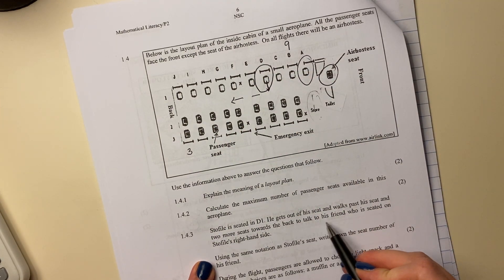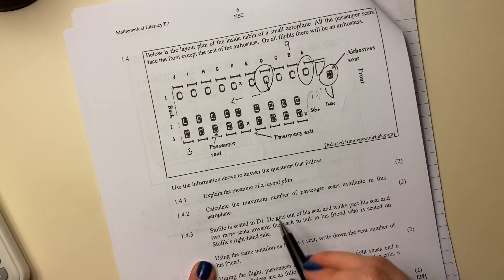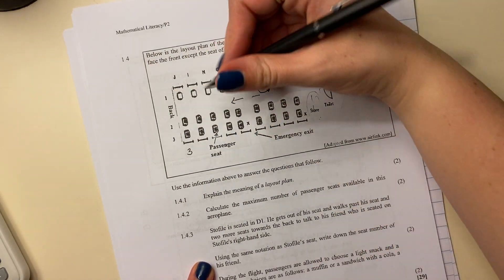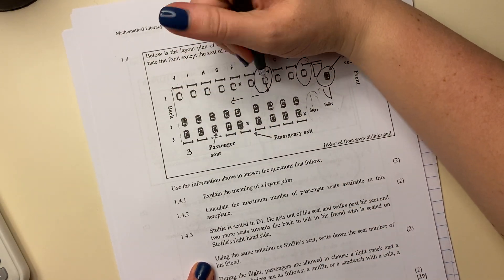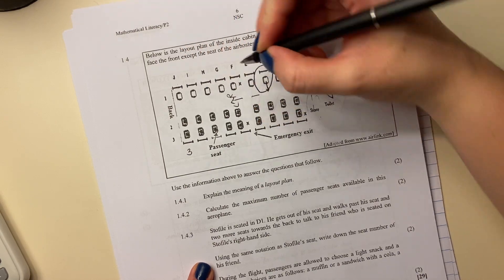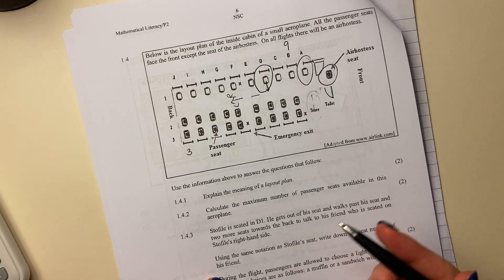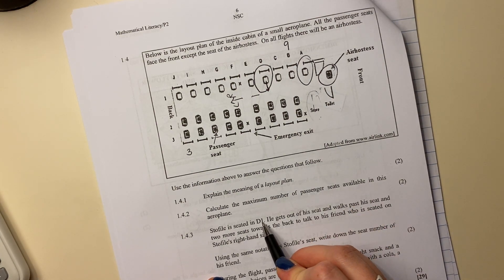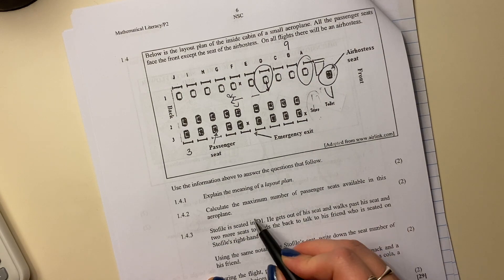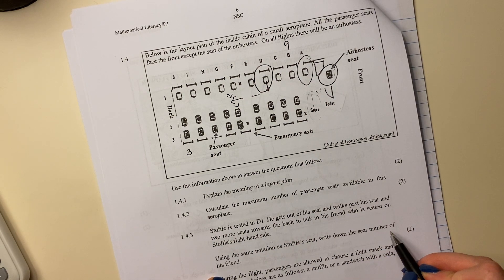And to talk to his friend who is seated on Stoffele's right hand side. So he's still on the side because if Stoffele is walking here, this is still his right. Because that would be his right and that would be his left. Use the same notation as Stoffele's seat, which is D1, alpha numeric. Alphabet and then the numerical number. Write down the seat number of his friend.